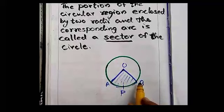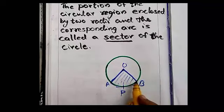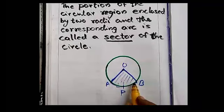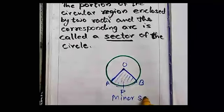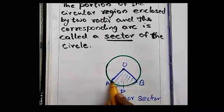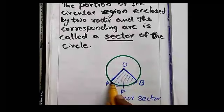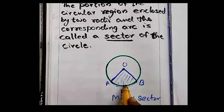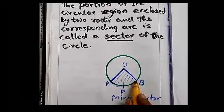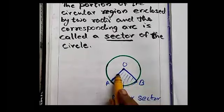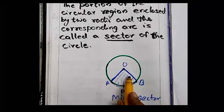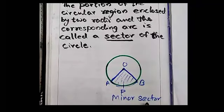OAPB is a sector which is a minor sector. What is a minor sector? You know what a minor arc is — if the arc has a length smaller than a semicircle, it is a minor arc. So a minor sector is the region enclosed by a minor arc and the two corresponding radii. This portion is the minor sector.